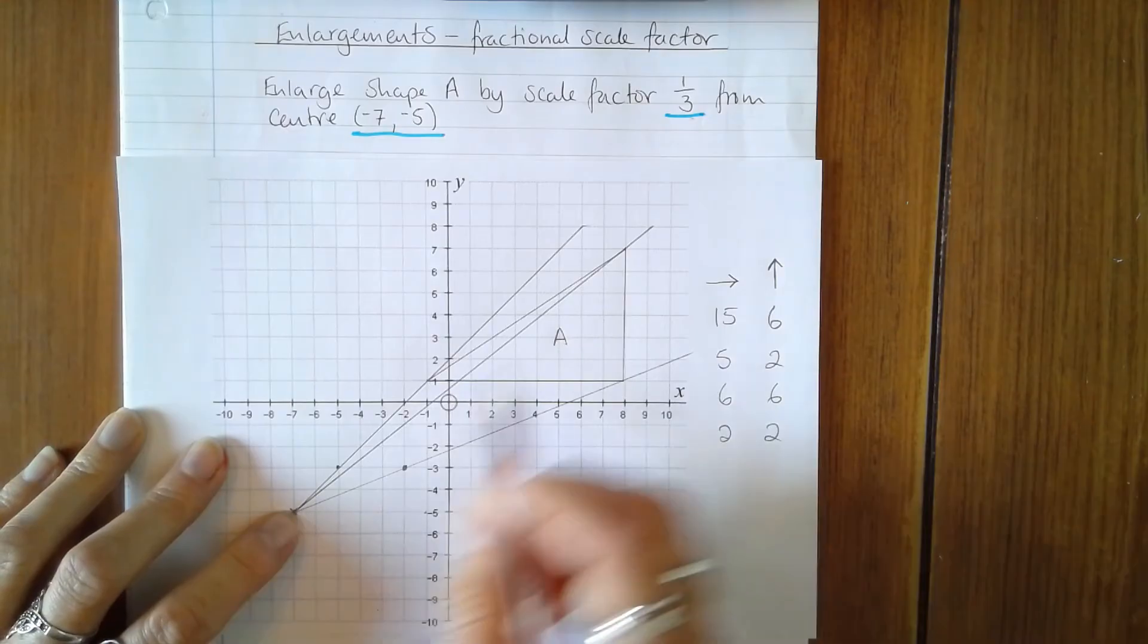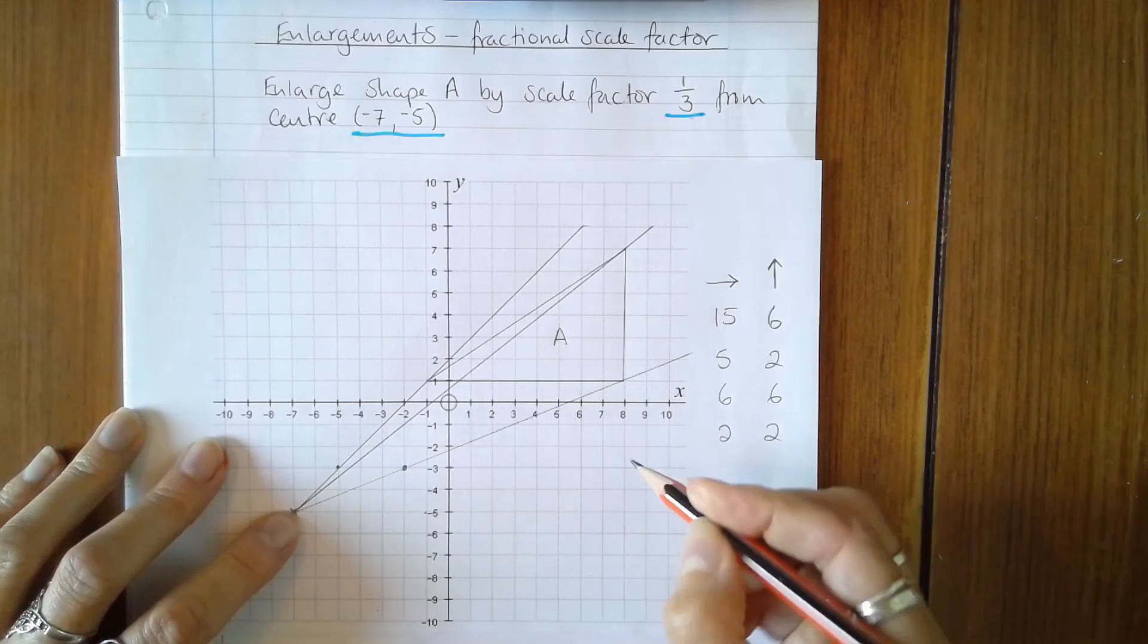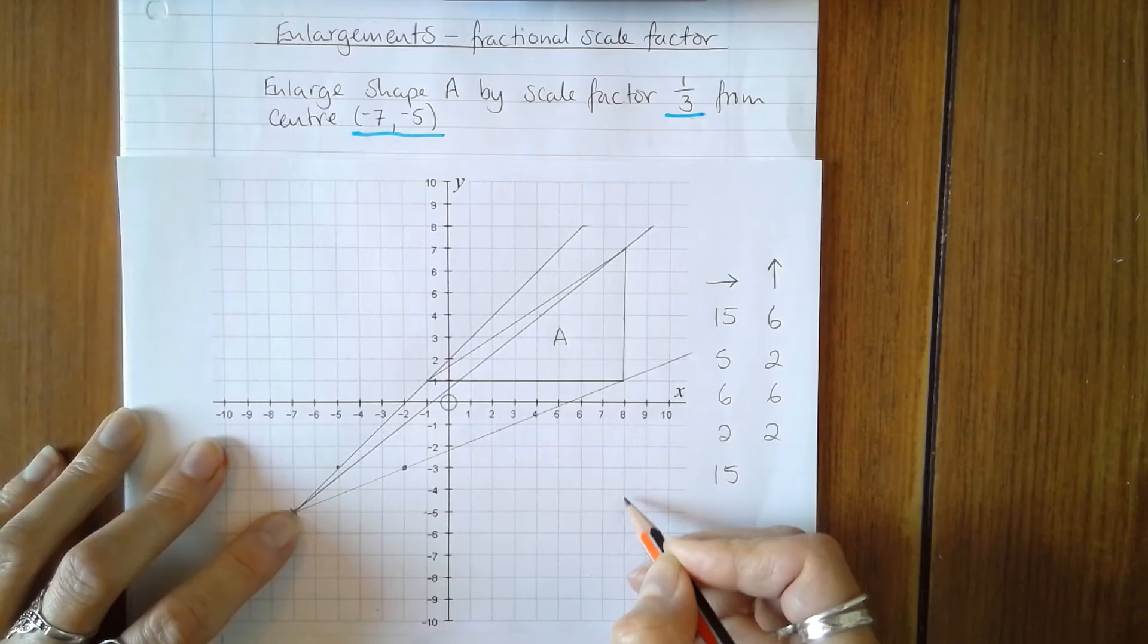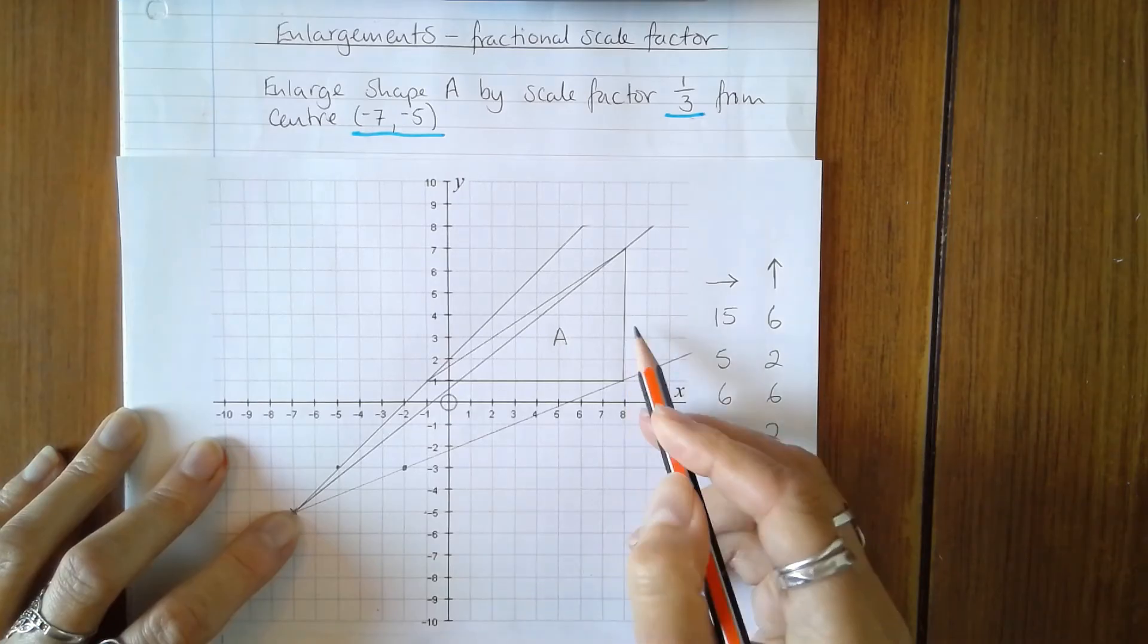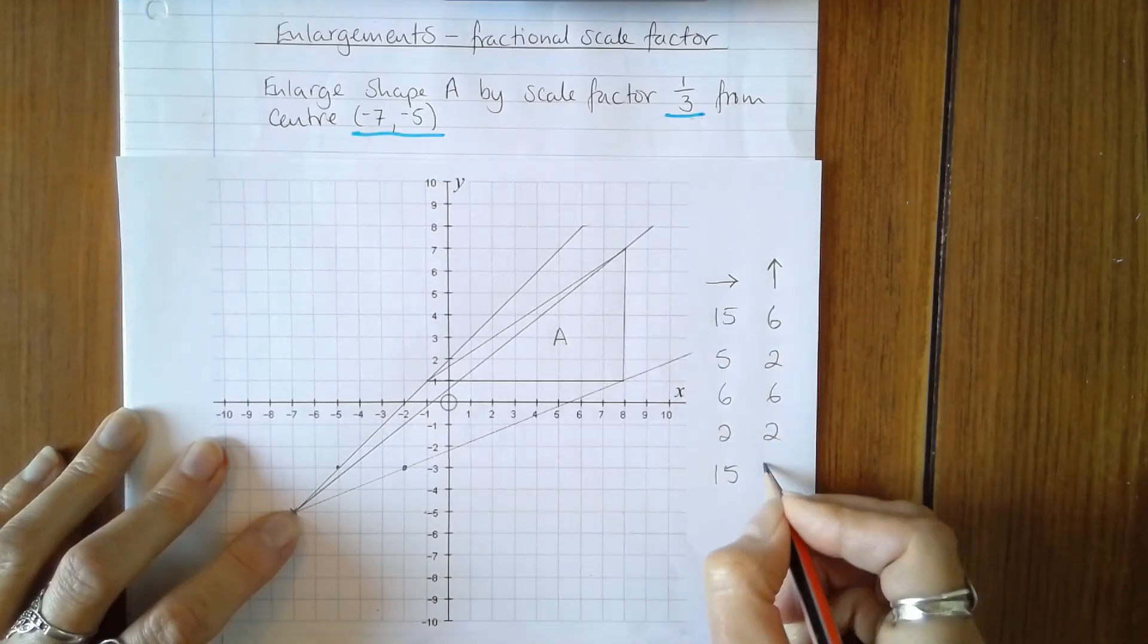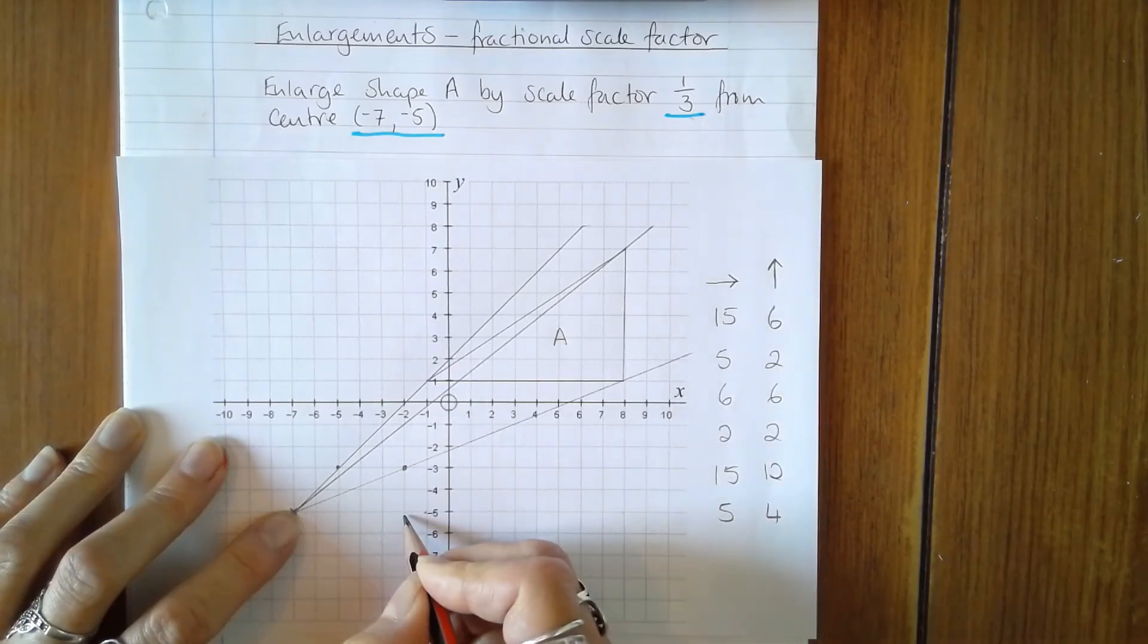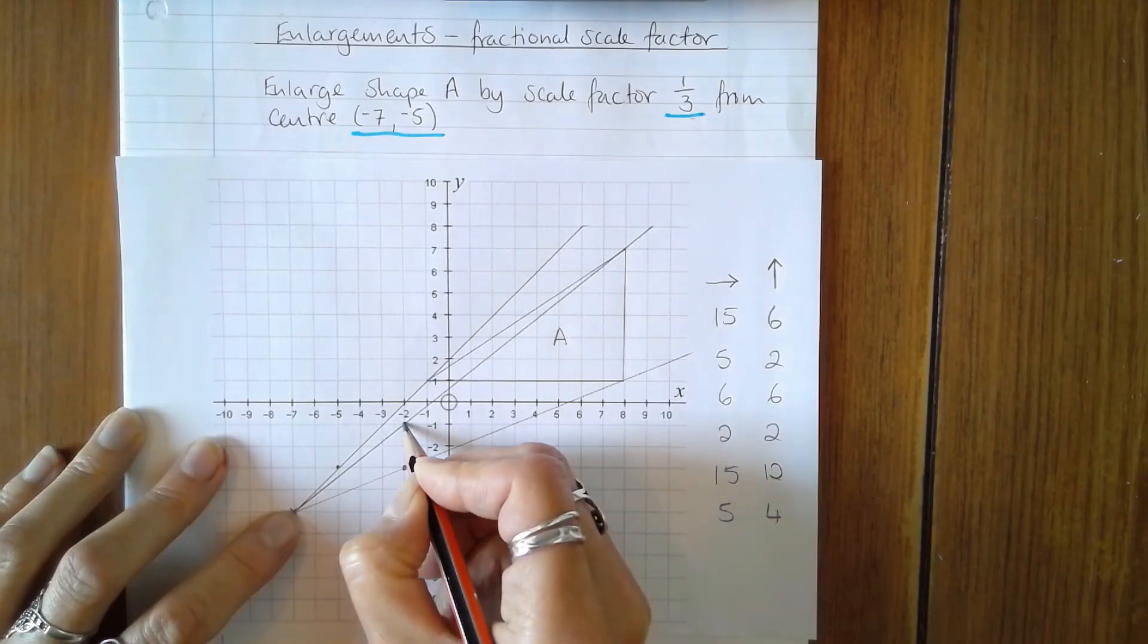And the third vertex up here, well I know this is 15 already. So 15 across and then I've got to go 3, 6, 9, 12 up. So dividing those by 3 gives me 5 across and 4 up. So 5 across and 4 up is here.